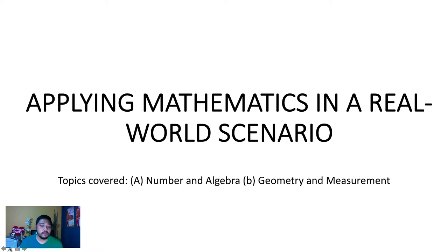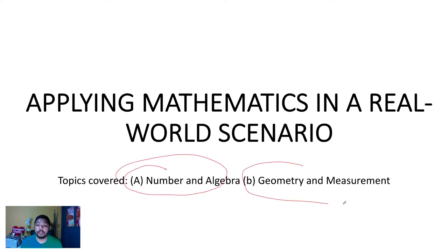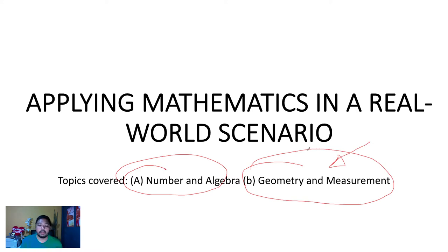This is about applying mathematics in a real world scenario. Typically for this section, it covers 2 main topics: number and algebra, and geometry and measurement. In this question, it involves geometry and measurement because it talks about circles, the volume of a cone, the volume of compost, and surface area.